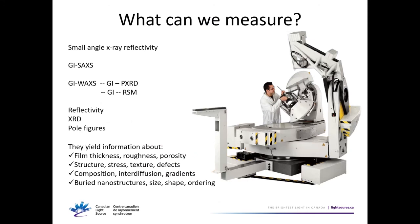What can we measure in thin films? There's small angle X-ray reflectivity, grazing incidence small angle X-ray scattering, grazing incidence wide angle X-ray scattering, grazing incidence XRD, reciprocal space maps, and pole figures. With these characterization techniques we get information about thickness, roughness, porosity, structures, stress, texture, defects, composition, and whether they have nanostructures. We want to learn everything about the thin film structure.